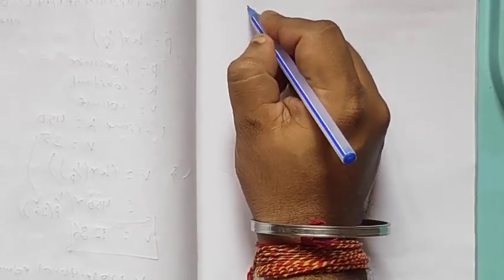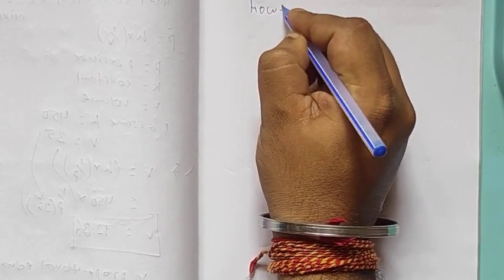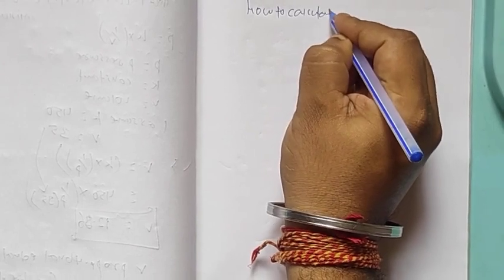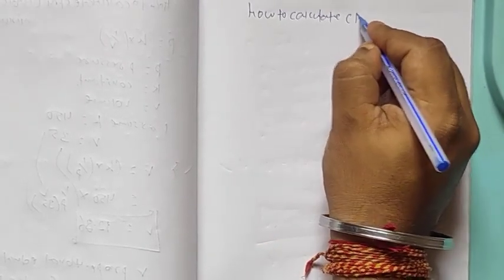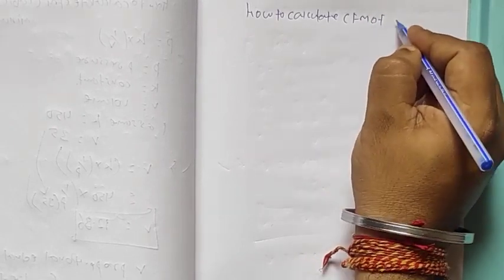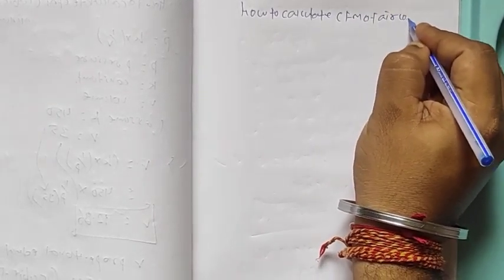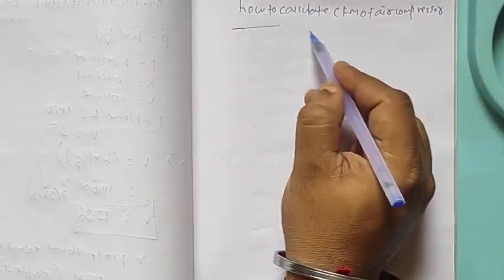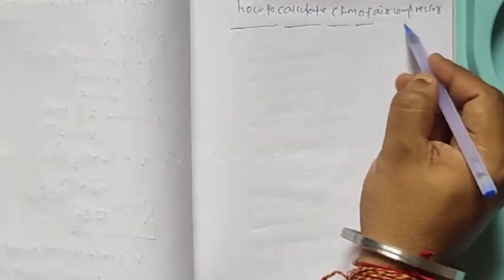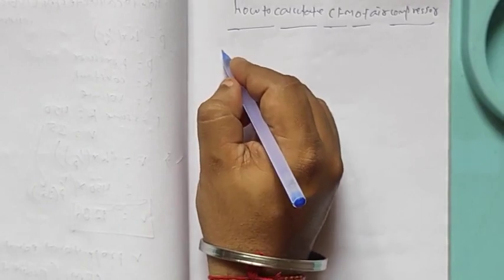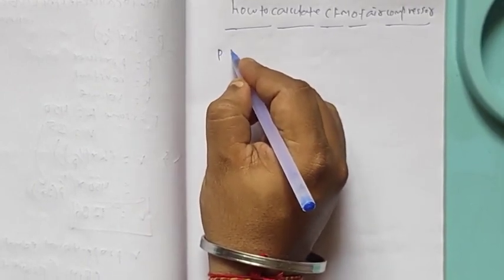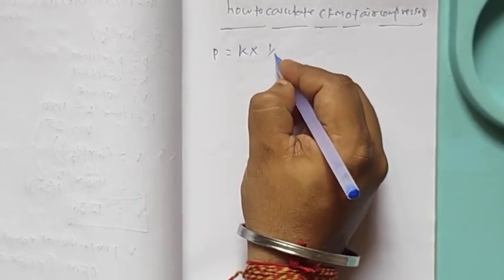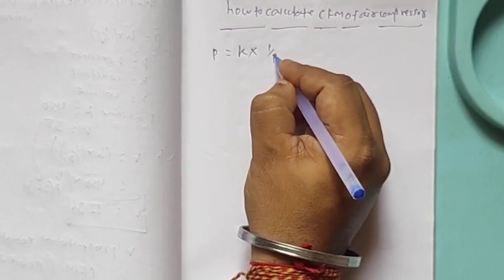Today I will discuss how to calculate CFM of air compressor. So, this formula is P equal to K into 1 by V.